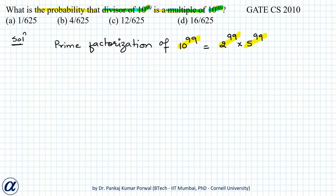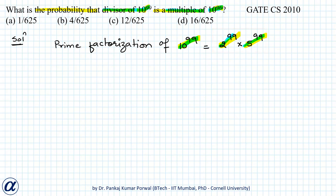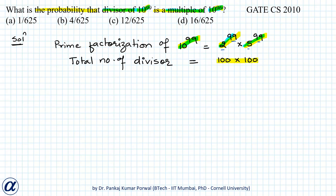A divisor of 10 to the power 99 can be obtained by selecting any number of prime factors — none, one, some, or all. Because we have 99 factors of 2, the number of ways of selecting is 99 plus 1, that is 100. We also have 99 factors of 5, so that can also be selected in 100 ways. Therefore the total number of divisors equals 100 into 100.